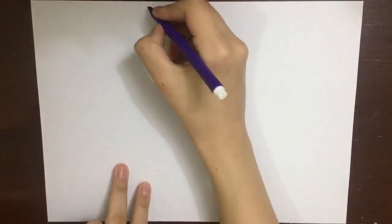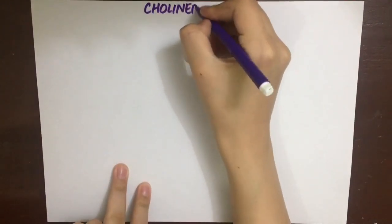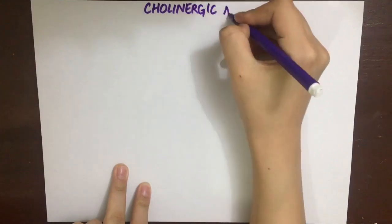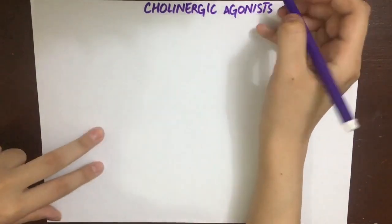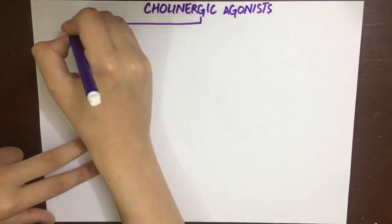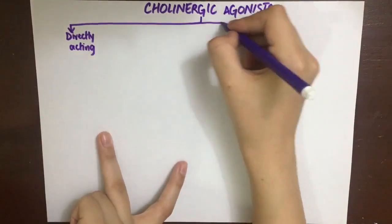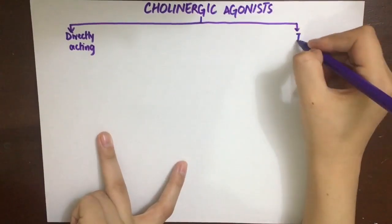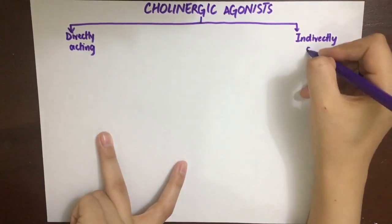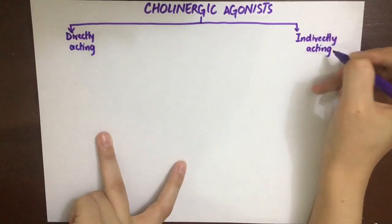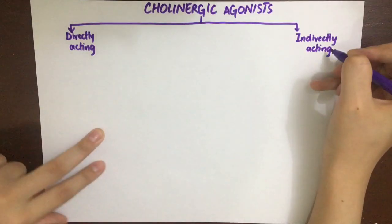First, we'll see the cholinergic agonists. These are drugs that will either mimic acetylcholine at the synaptic cleft or act indirectly via inhibiting acetylcholinesterase enzyme and increasing acetylcholine at the synaptic cleft. We'll discuss both the muscarinic and nicotinic agonists together.